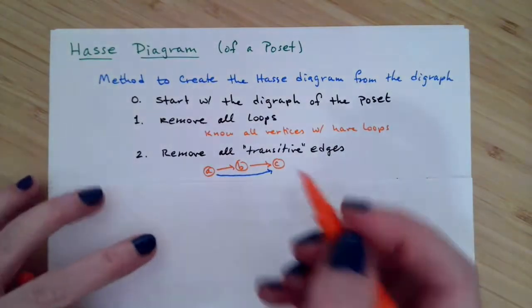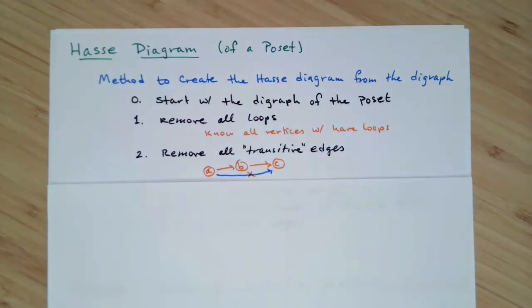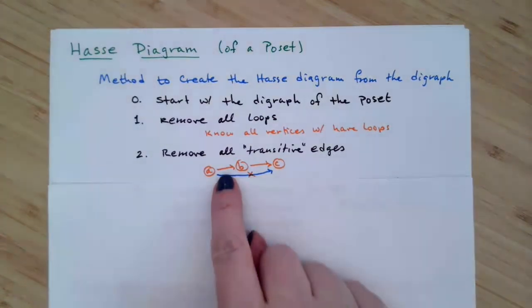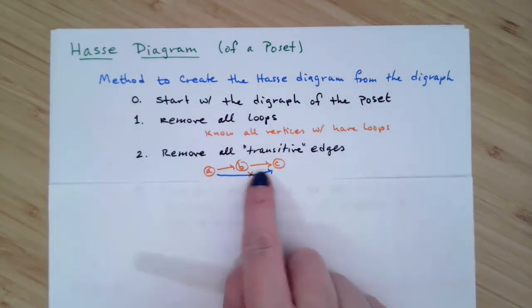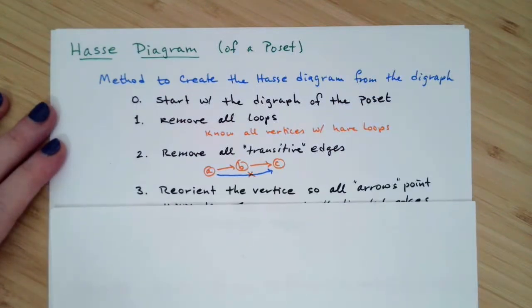So removing the transitive edge is removing that longer edge, that colored blue edge, and say we know that we have the transitive property employed. So if we can travel along any path, whether it's just using one arrow or multiple arrows, by way of transitivity we know we can get to that A to C even if we're only physically going to write the two arrows of A to B and B to C. So that's the second thing, you remove all of your transitive edges.